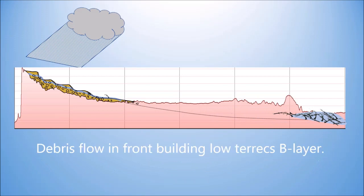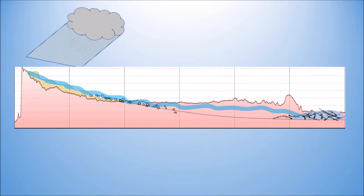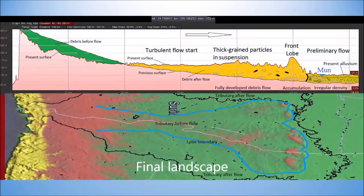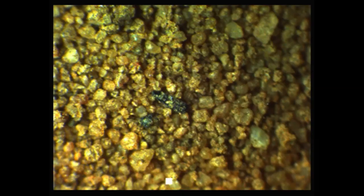When the low-terrace flow in front stopped by desaturation, the gravel piled up behind on the mountainside of the Mun and Chi rivers, creating the high terraces. The dust from the cloud continually falling on a now-water-filled Korat Plateau created the Yasathon soil, up to three meters thick, without graded bedding.